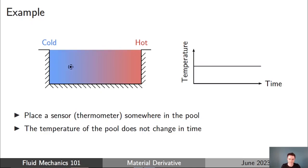I want you to think about placing a temperature sensor, like a thermometer, in the pool at a given location. In this example, the temperature of the pool itself is not varying with time, so the thermometer will read a constant temperature through time. Of course, in reality there would be small variations, but we're not considering those today. If we place the sensor somewhere in the pool, the temperature will be constant with time.